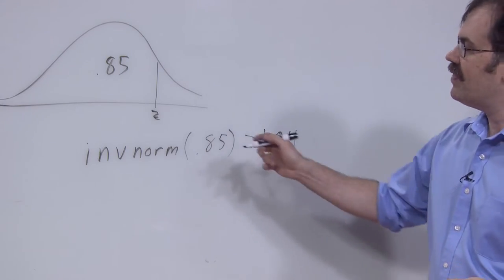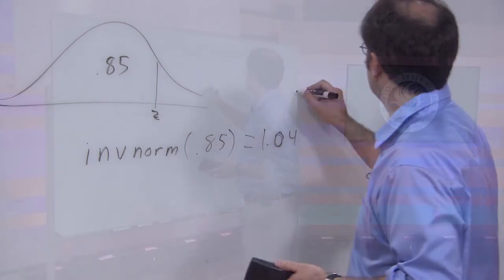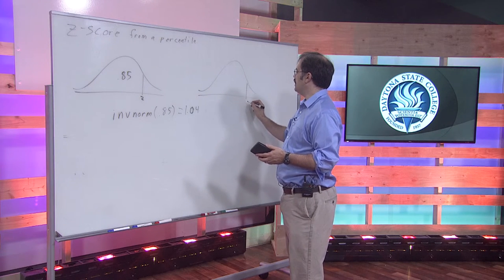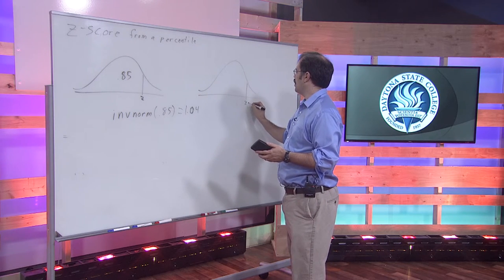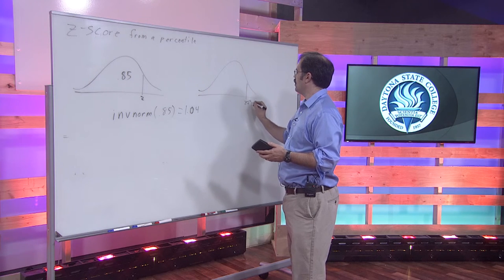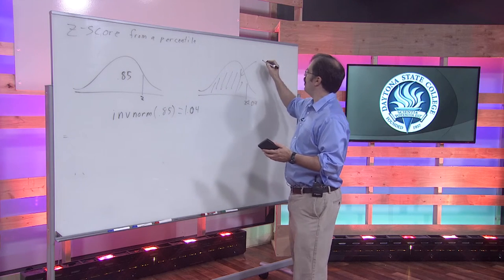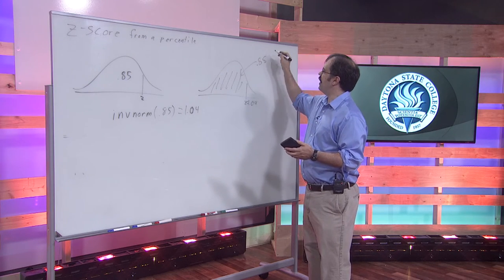And so what that says is that under the standard normal distribution, if you had a z-score of 1.04, the area to the left of it is 0.85.